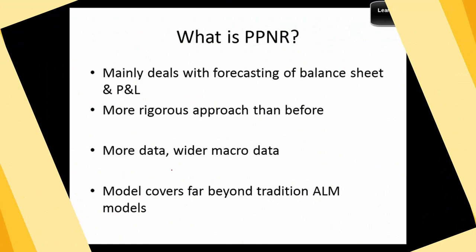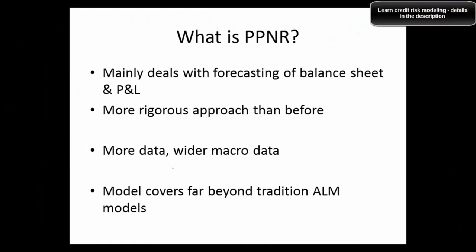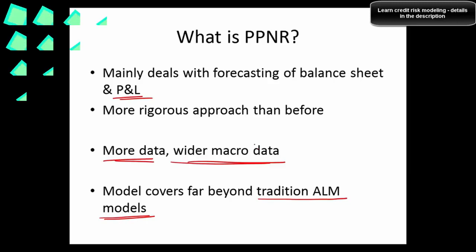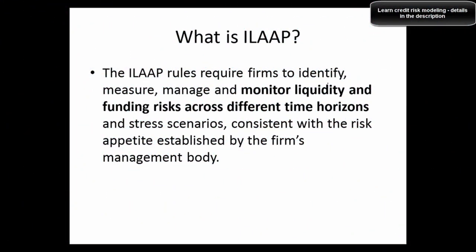CCAR lays out baseline, adverse, and severely adverse stress scenarios for banks to perform stress tests, quantifying risk in such scenarios. What is PPNR (pre-provisioning net revenue)? It mainly deals with forecasting the balance sheet or profit and loss. It is more rigorous than previous balance sheet modeling — there is more data, wider macro data. The model covers far beyond traditional ALM modeling.